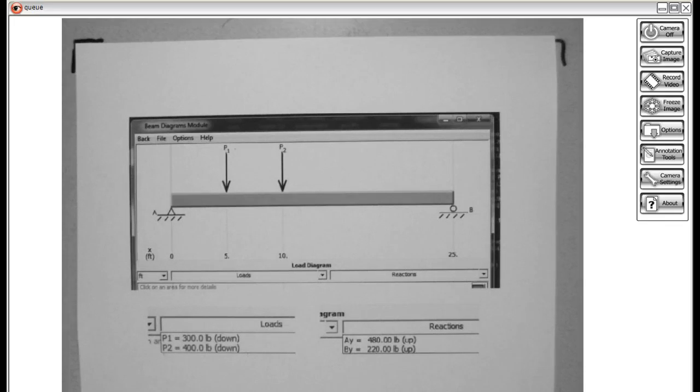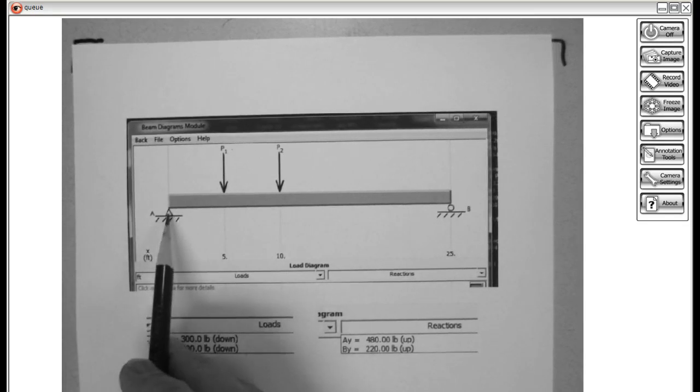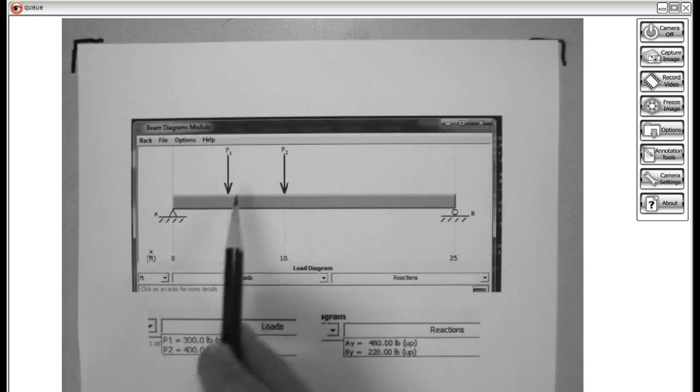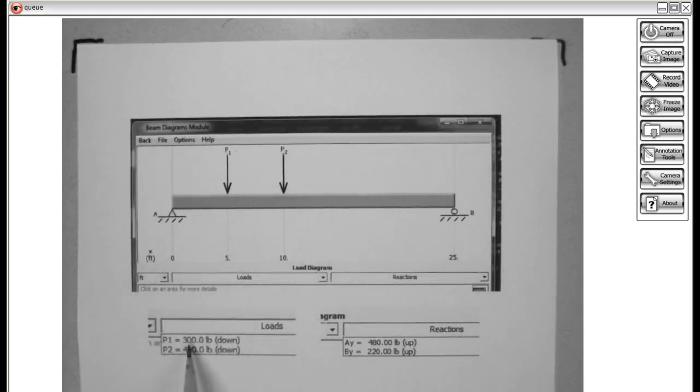From MD solids, I drew up this beam with a pin support here and a roller support here with two forces. F1 is 300 pounds down. F2 is 400 pounds down. And these are the reaction forces I hope to find.